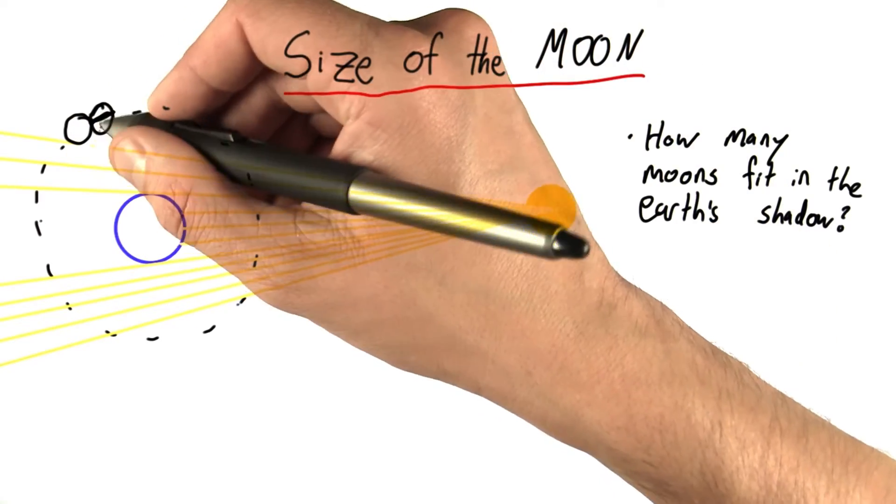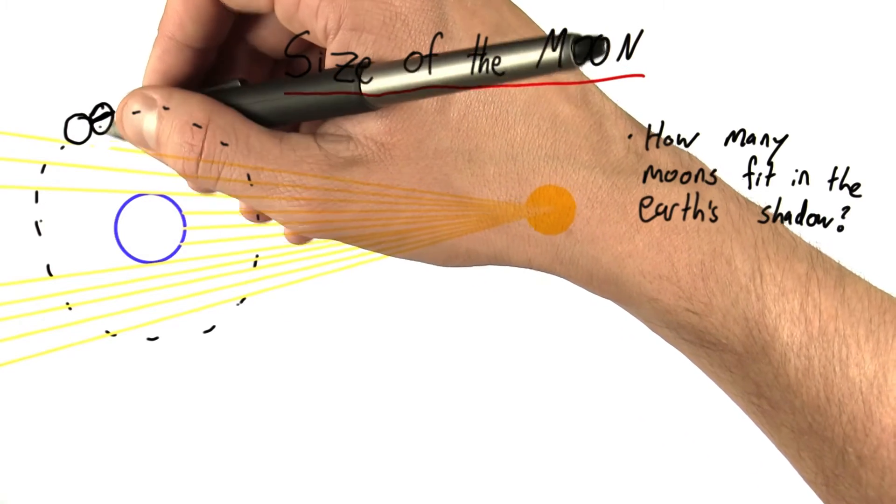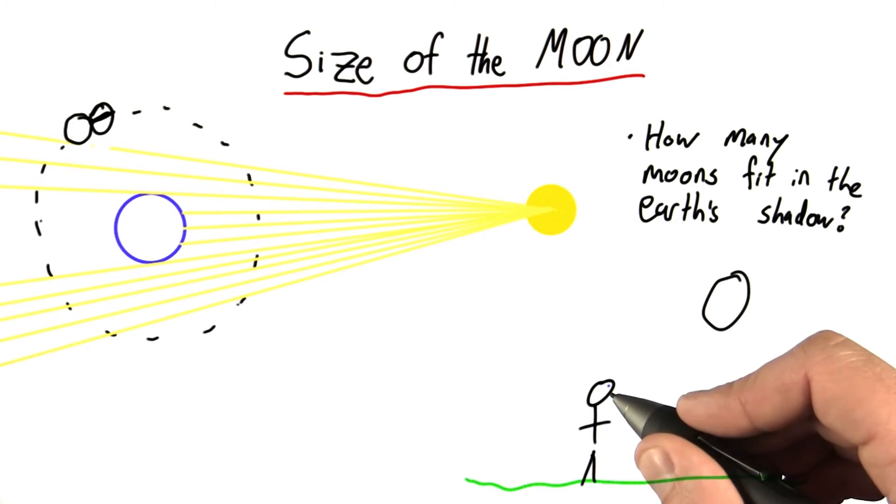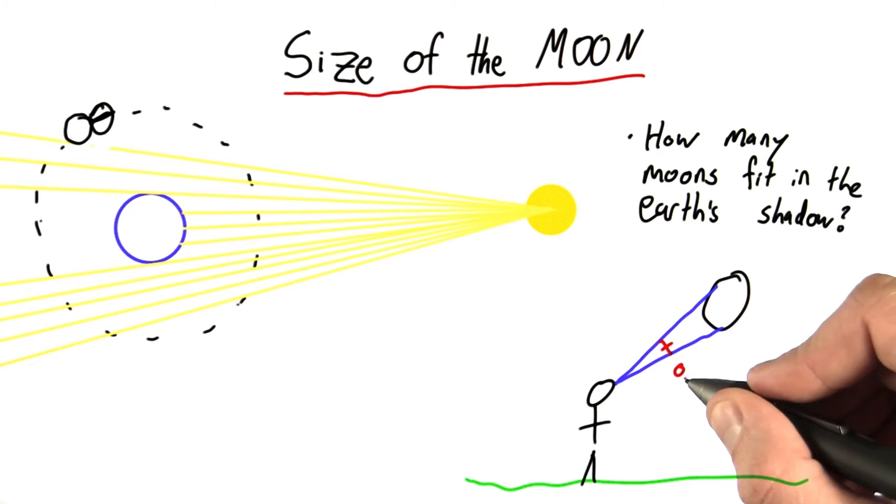We can answer that by noting the fact that the moon has an angular size in the sky of about half a degree. And so what do I mean by that? If you're standing on earth, and if you first look at the top of the moon, then look at the bottom of the moon, this angle here is 0.5 degrees.